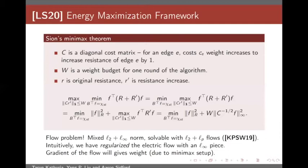Additionally, recall our algorithm wanted to get weights — resistance increases — not just some flow at the end. Fortunately, because of this minimax setup, the optimum naturally comes with a pair: flow f and weights w that induce that flow. You can get these weights by taking a gradient of the flow, which comes very naturally from this minimax setup.